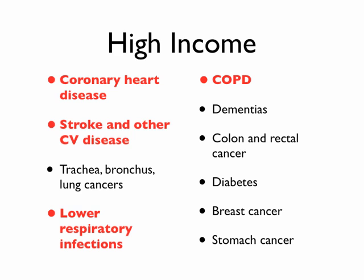In high income countries, you can see the top four are still there. There are more cancers present, and dementia comes in — you're able to live long enough to actually get dementia. Diabetes comes up to position seven or eight. The top four remain constant across all income levels.